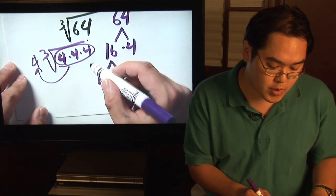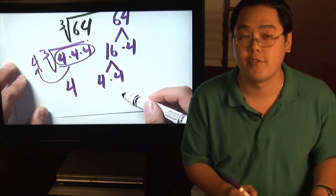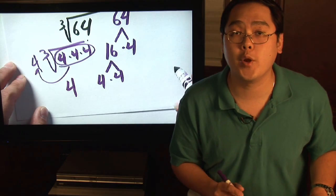So in other words, the cube root of 64 would just be the number 4. It's a three for one trade when it comes to numbers.